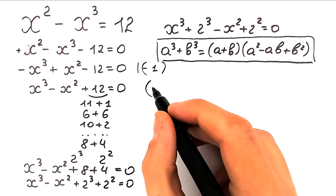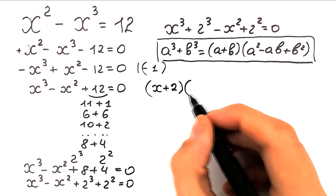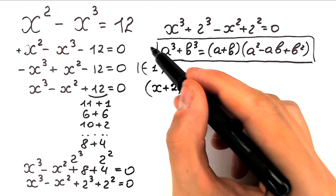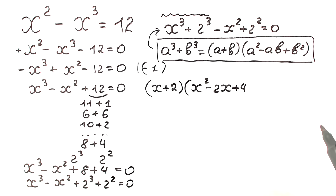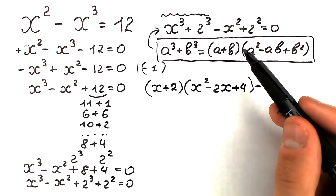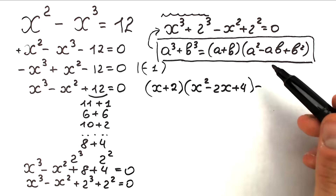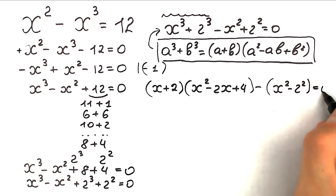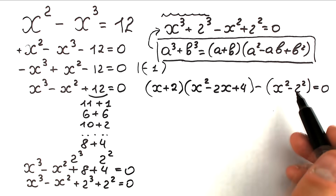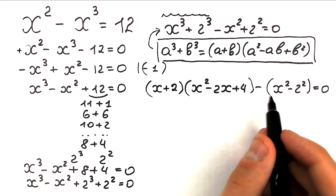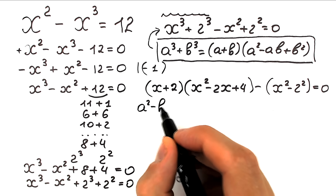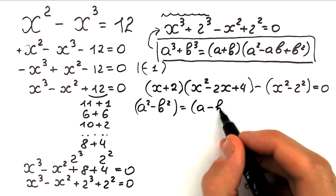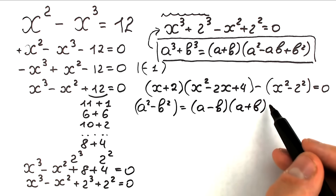Applying the sum of cubes formula, we get (x + 2)(x² - 2x + 4). Then we handle the square terms. We have minus, and inside the parentheses x² minus 2² — this is a difference of squares. Using the formula a² - b² = (a - b)(a + b), we apply it right here to get minus (x - 2)(x + 2).